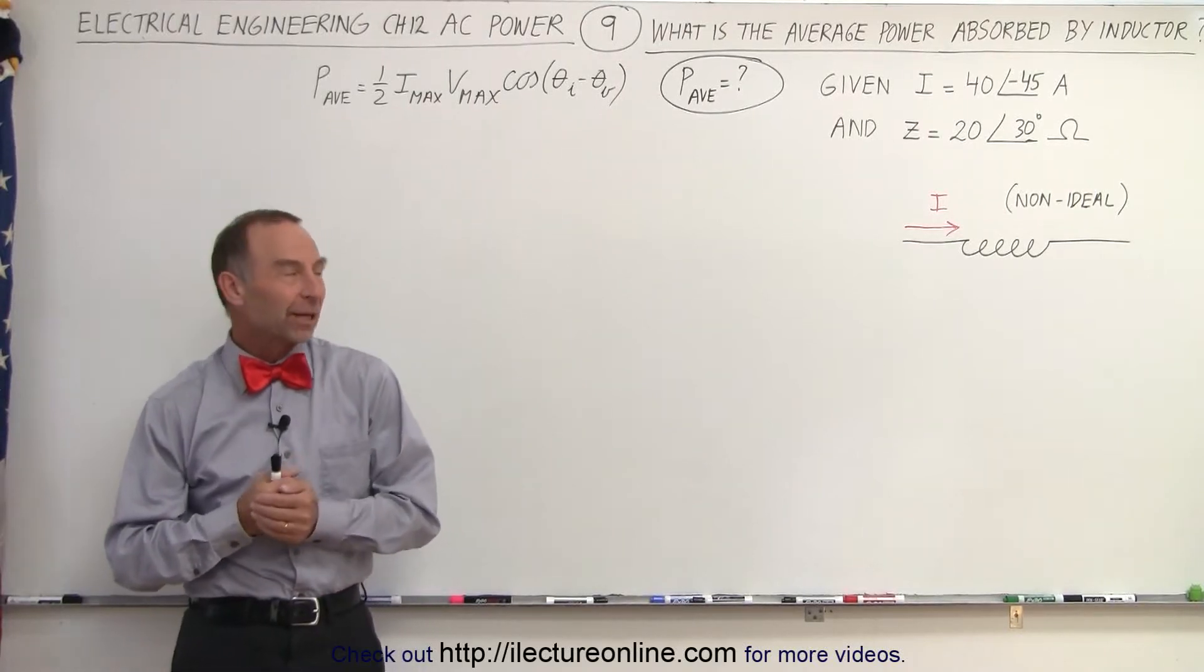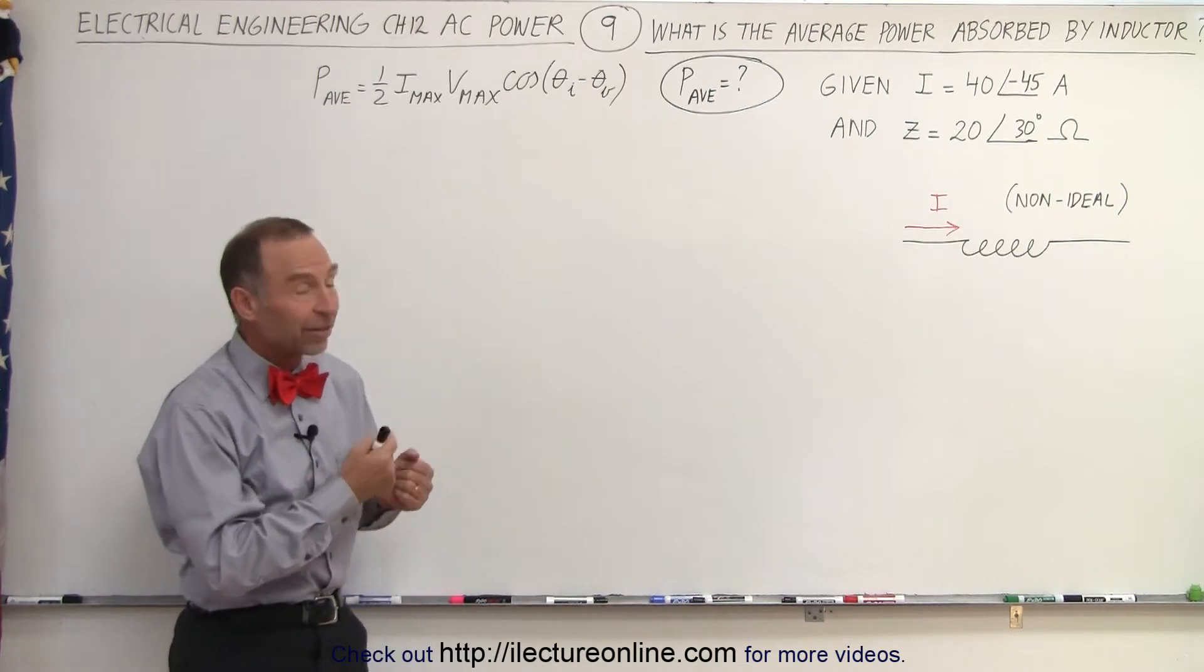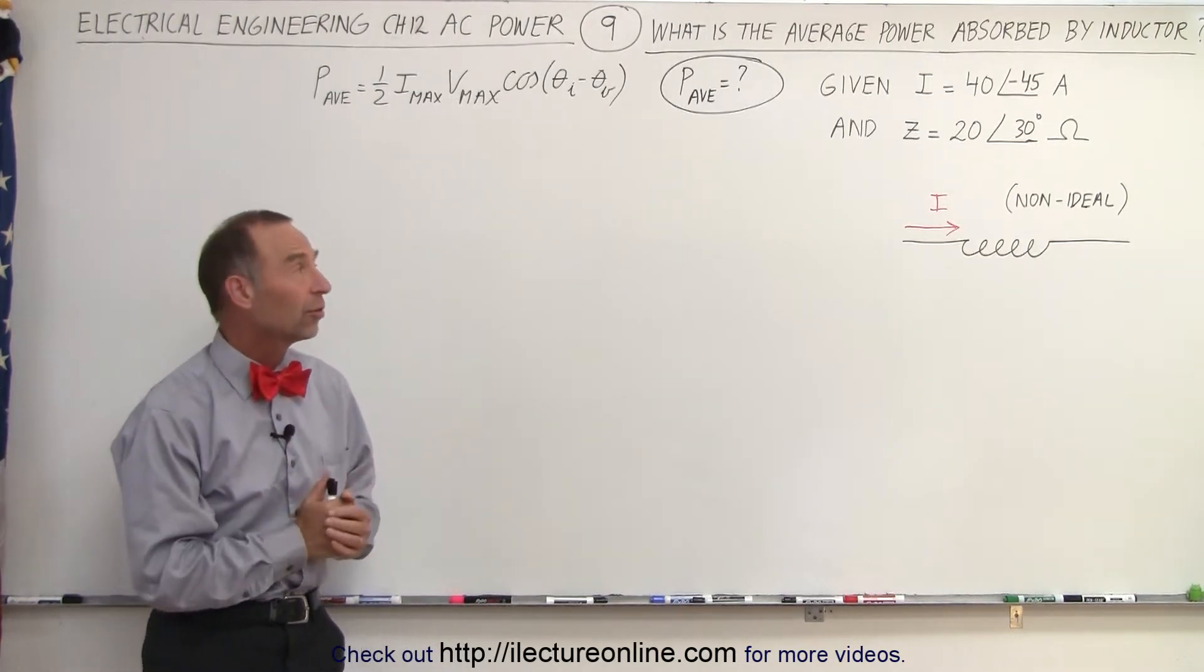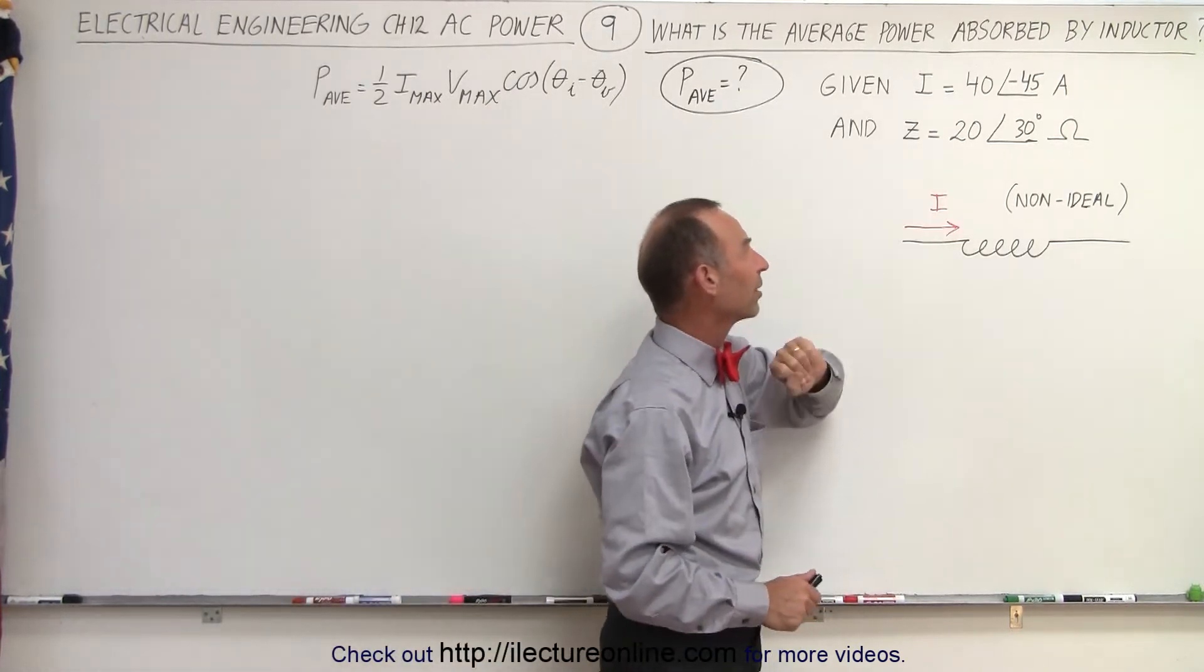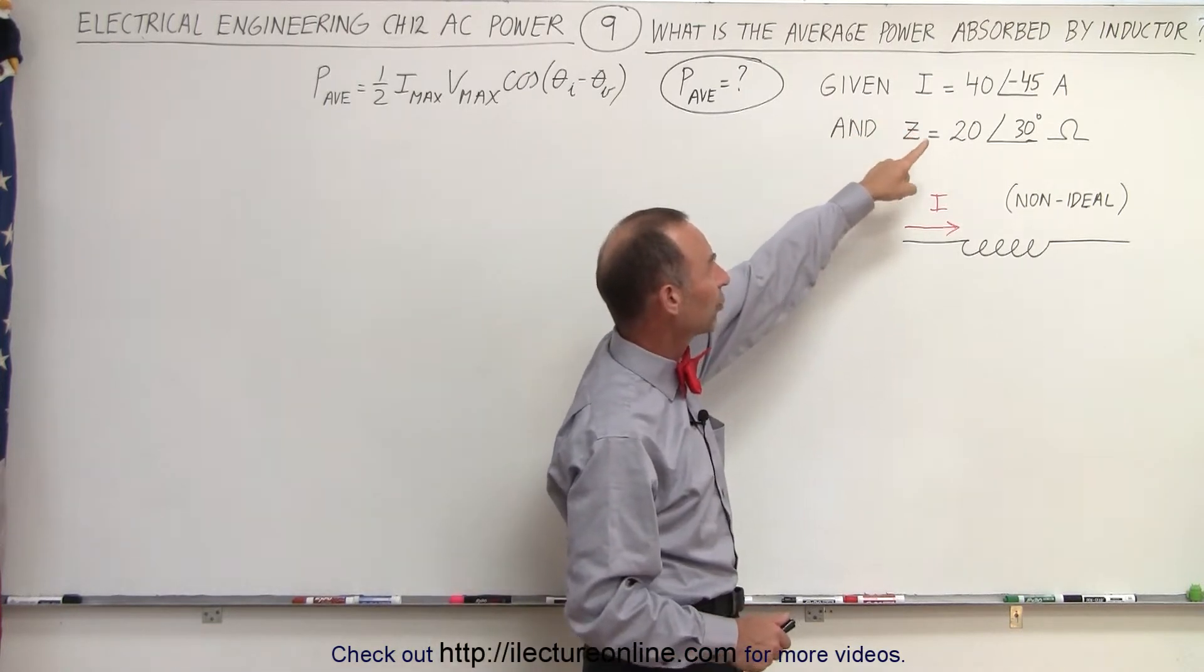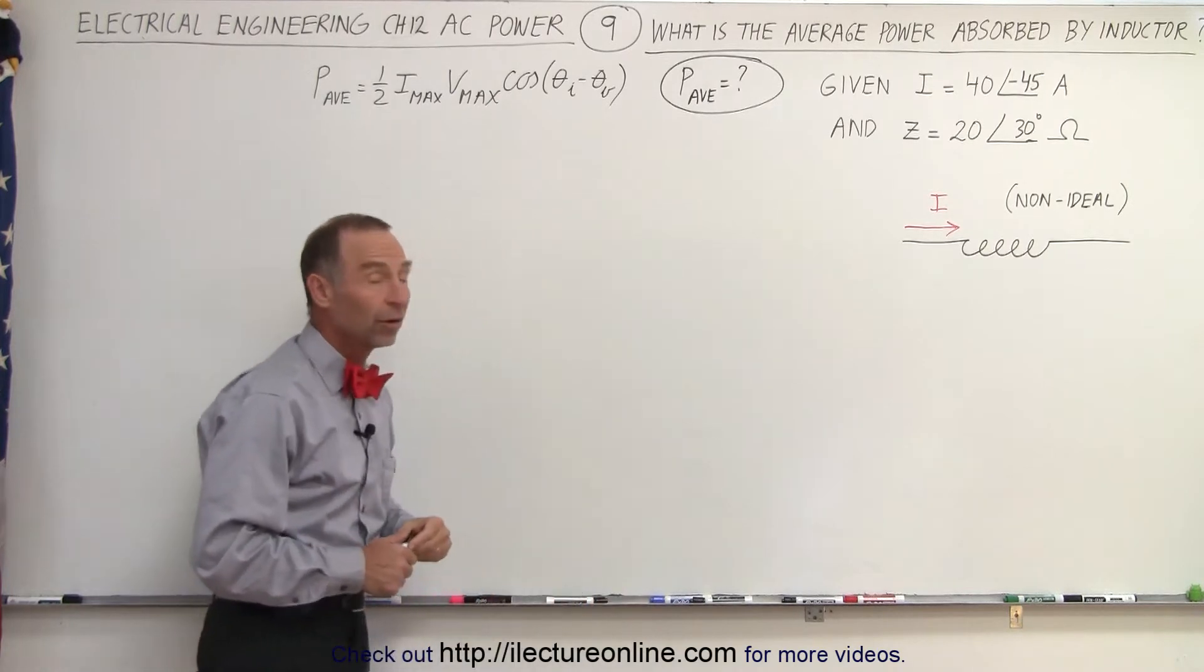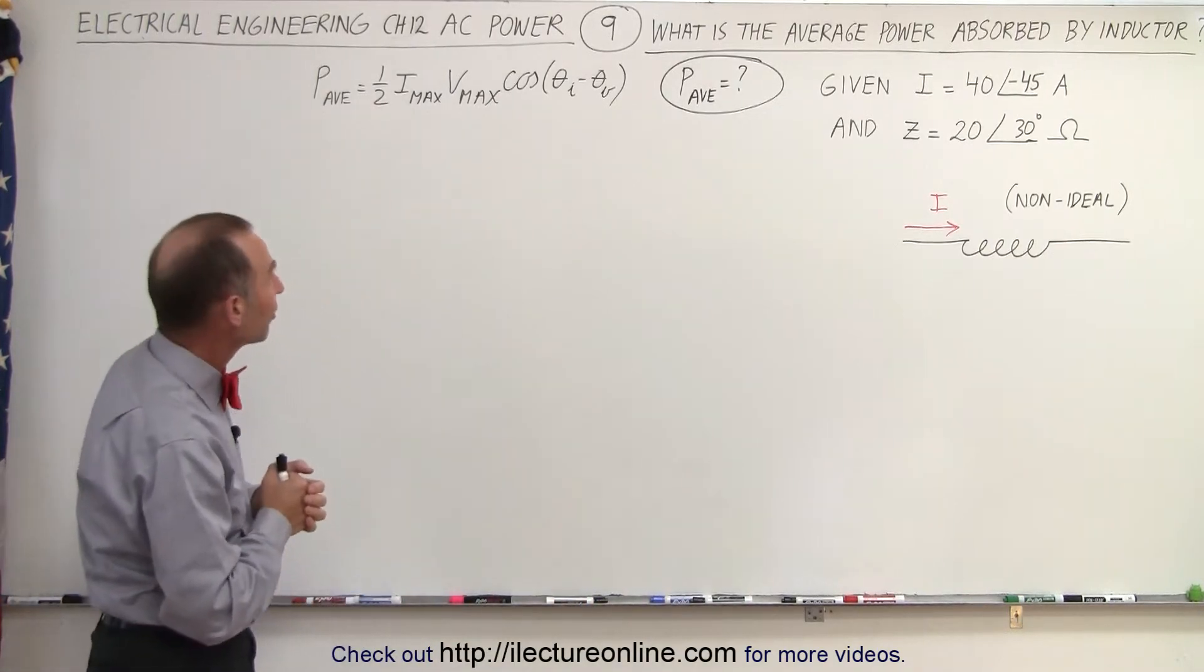Welcome to our lecture online. Here we're going to calculate the power absorbed by an inductor, in this case a non-ideal inductor, which means it also contains some resistance such that the impedance of the inductor has a phase angle. Let's assume that we're given that the current to the inductor has a magnitude of 40 amps and a phase angle of minus 45 degrees. So what will be the average power consumed or absorbed by this inductor?